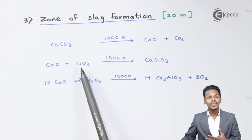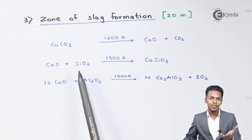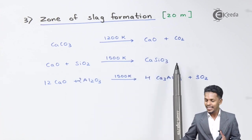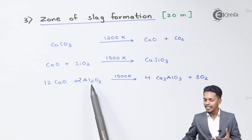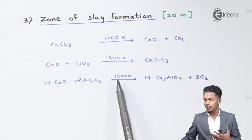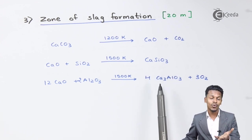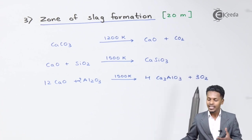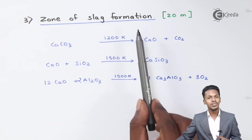CaO acts as a flux and reacts with the impurity SiO2 to form CaSiO3 slag. CaO also reacts with Al2O3, another impurity from hematite, at 1500 Kelvin to form calcium aluminate slag. These slags are removed, and the waste gases evolved are also taken out.